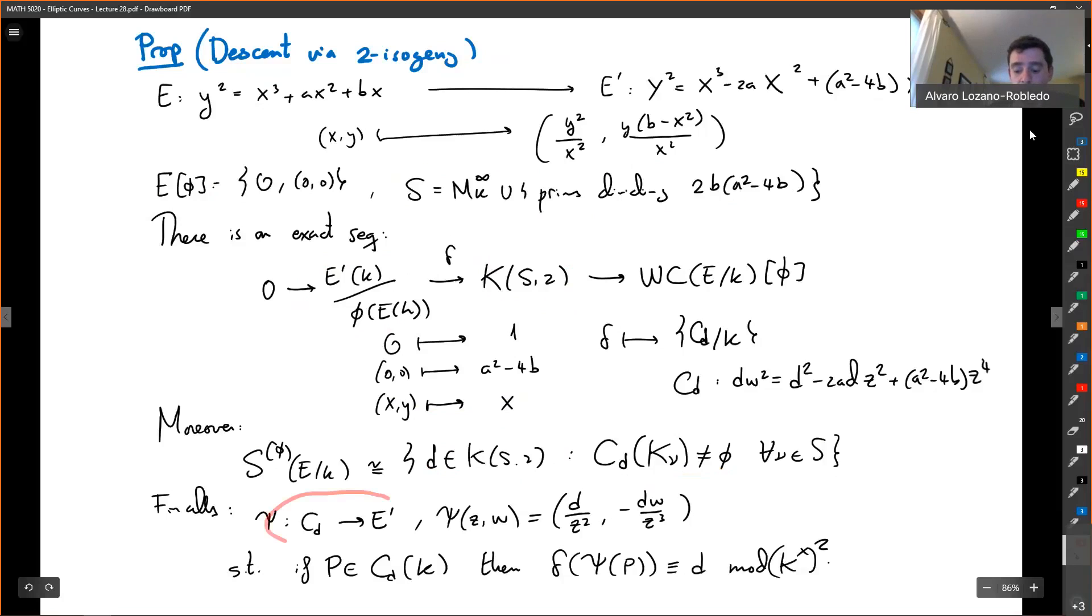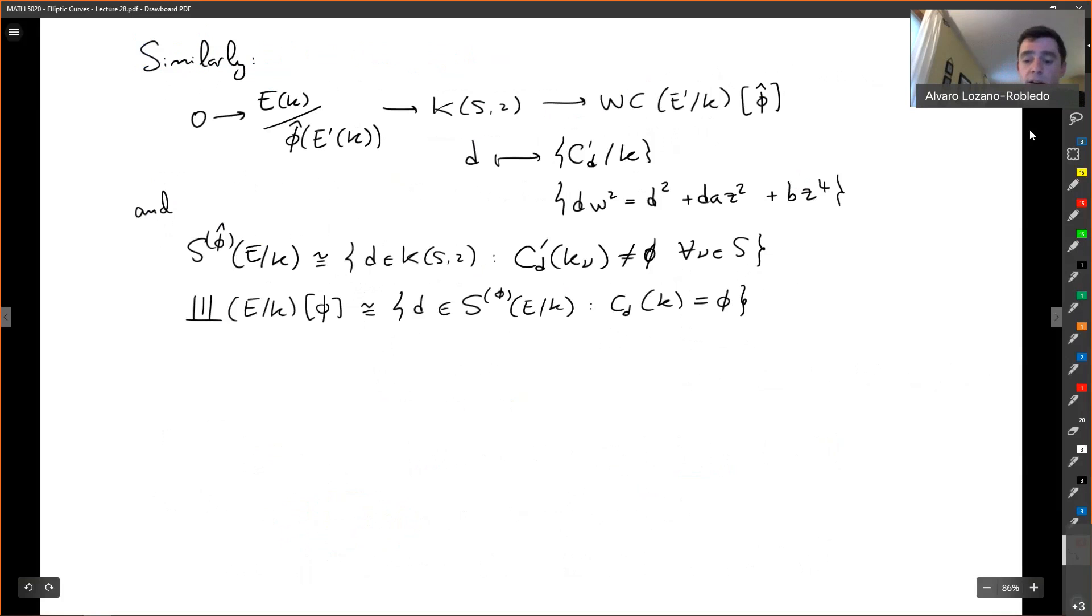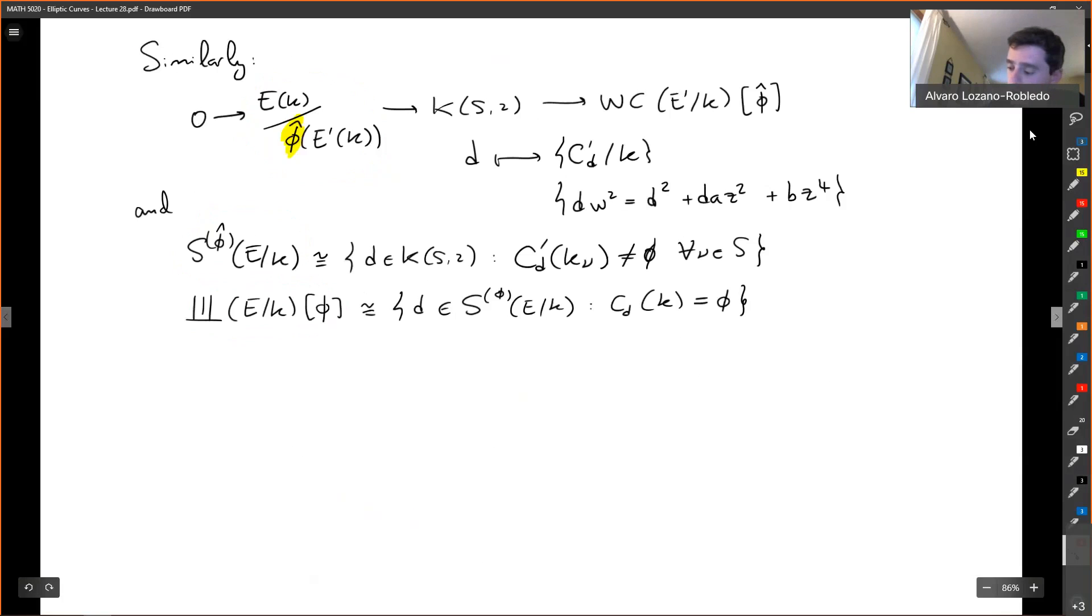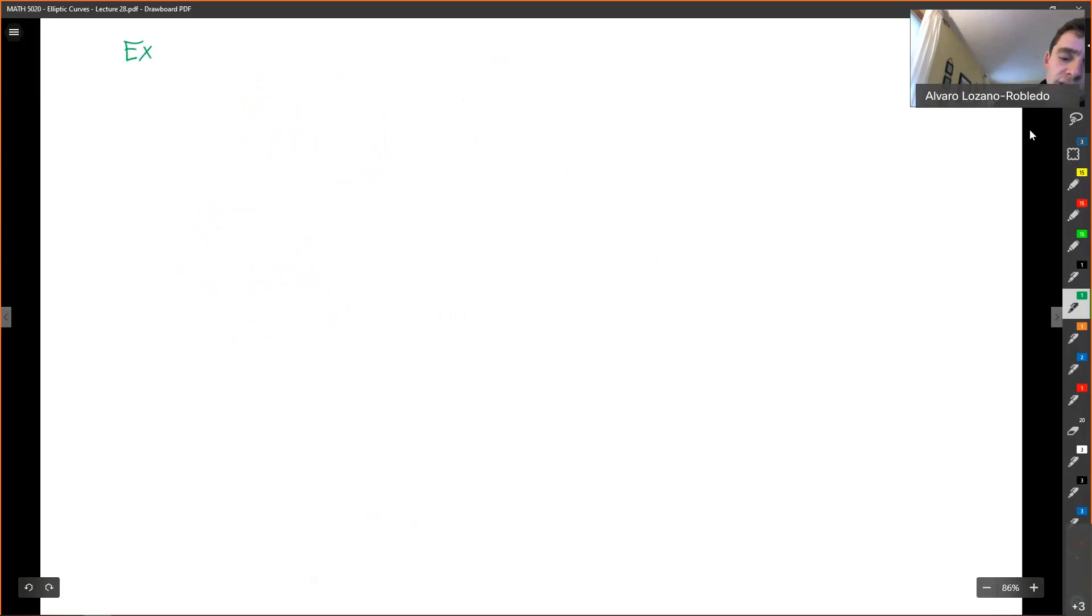And the homogeneous spaces locally are in the trivial class if and only if there are points locally. So what we're looking for is how to convert those classes in particular. So what I want to do is just work out one example so you see this in action.